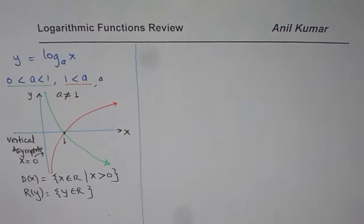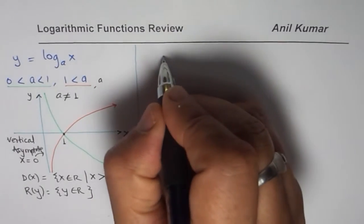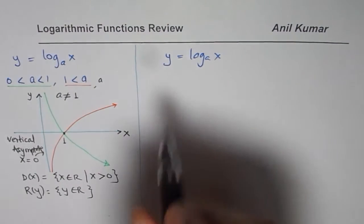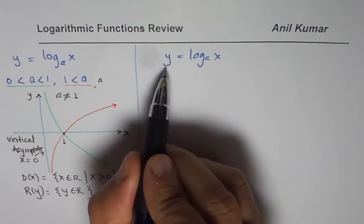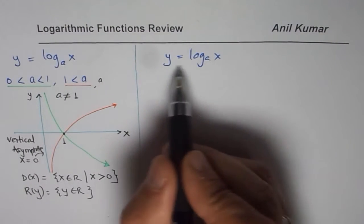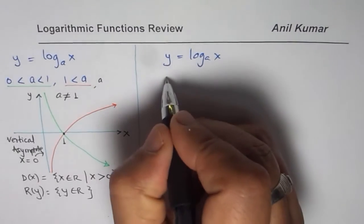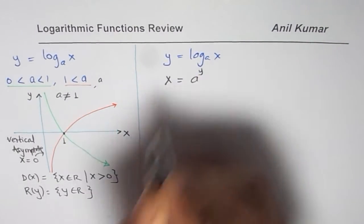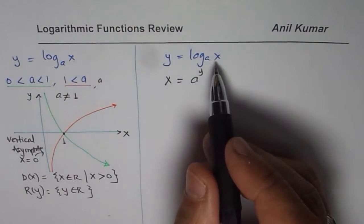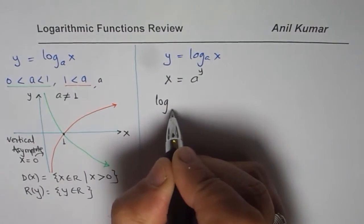Now let's talk about how to evaluate logarithmic functions. For y equals log base a of x, the strategy is to rearrange the equation into exponential form: a to the power of y equals x. This rearrangement is a very effective way of evaluating or finding the value of a logarithmic function.